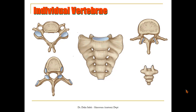How can you differentiate the different types of vertebrae according to the region? Cervical vertebrae are characterized by a small body and the presence of the foramen transversarium — a hole in the transverse process — and also by a bifid spine. In the thoracic region, the thoracic vertebrae are characterized by the presence of facets, small areas for articulation with the ribs, on the side of the body and at the tip of the transverse process.